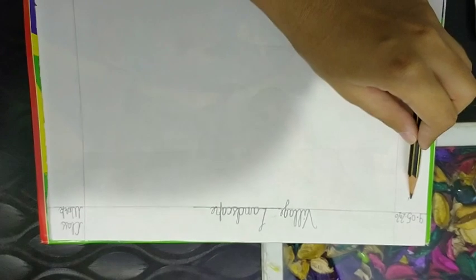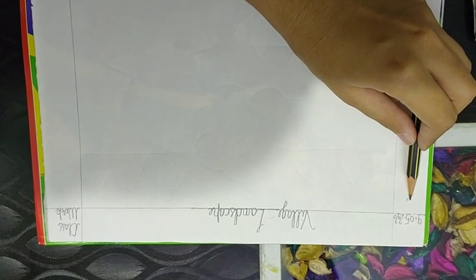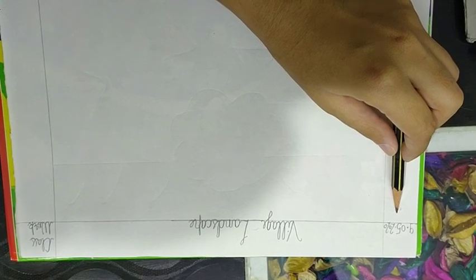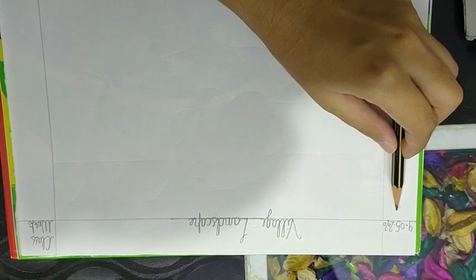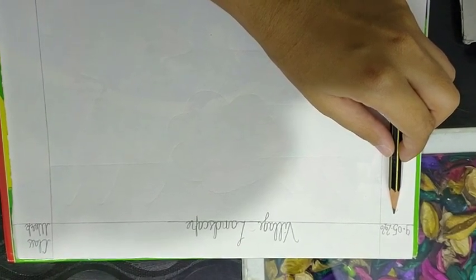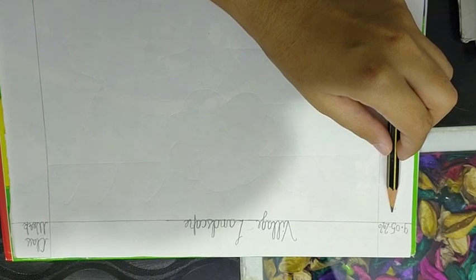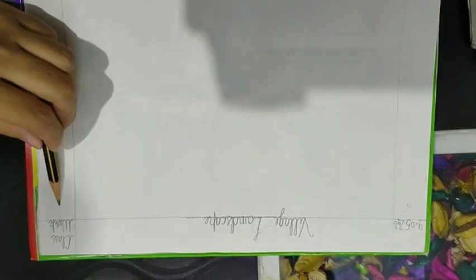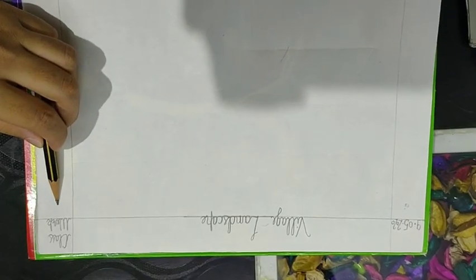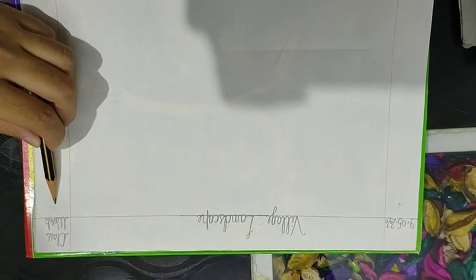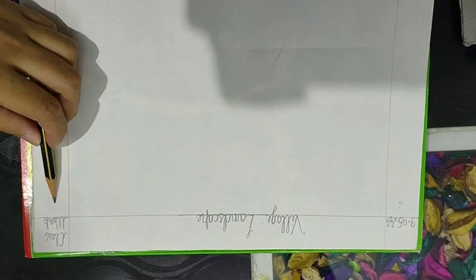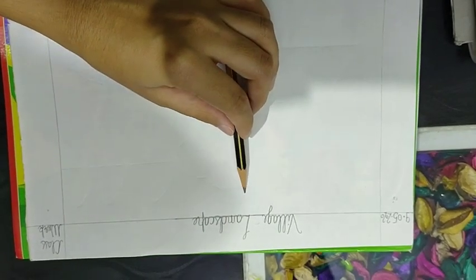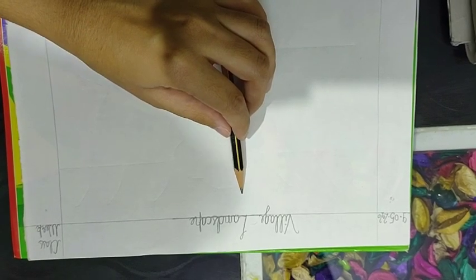Have you all drawn the margins? Make sure your lines should be straight. Now here on this side, you have to write today's date, that is 9th of May 2020. On this side, you have to write classwork. In classwork, C and W will be capital. And on the upper margin, you have to write topic, that is village landscape.